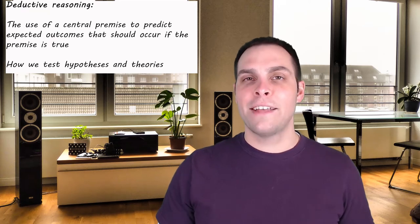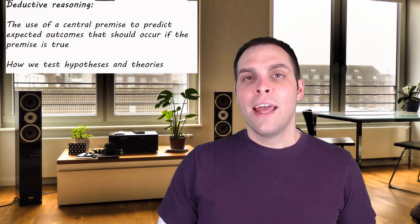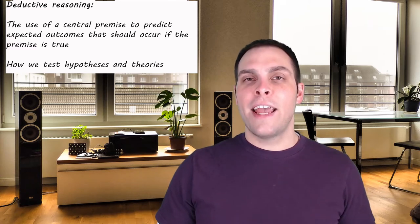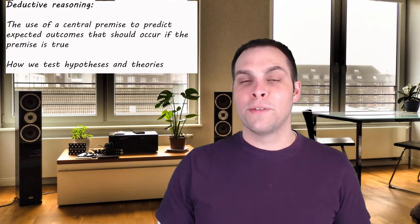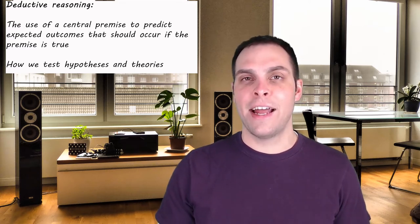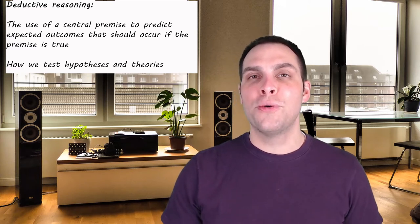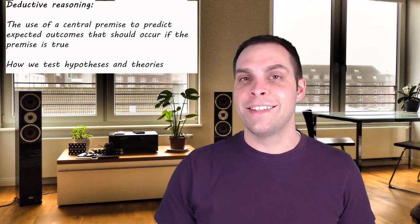Deductive reasoning is how we test hypotheses. It's how we utilize scientific theories. Deductive reasoning takes a central principle, a core principle, such as species evolved through natural selection, and then utilizes that to predict what other things should be true if that particular theory is accurate.